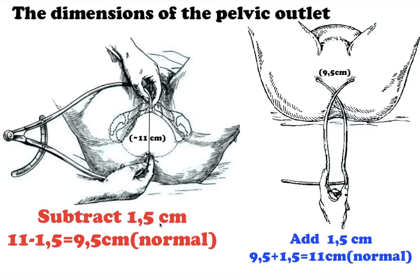Which accounts for tissue thickness. To measure the transversal dimension, one should add 1.5 cm to the obtained distance between the internal surfaces of the ischial tuberosities, which is 9.5 cm, taking into account soft tissue thickness. If we add 1.5 to 9.5, we get 11 cm, which is the transversal dimension of the pelvic outlet.